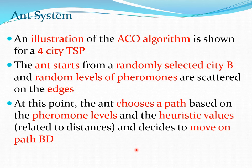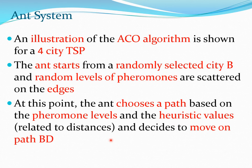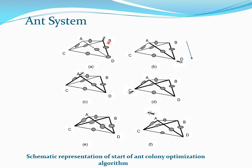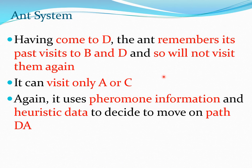This is a four-city TSP, a very simple problem. The ant starts from a randomly selected city — let's say city B — and random levels of pheromones are scattered throughout the lines connecting the cities. The ant chooses a path based on pheromone levels and heuristic values related to distances. Since the pheromones are randomly scattered, a random value results, and the ant decides to move along path B→D, from city B to city D.